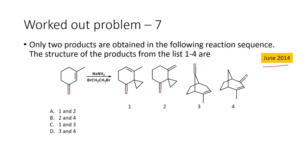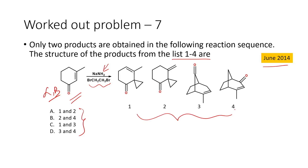Let us move on to the next problem, which appeared in June 2014. Only two products are obtained in the following reaction sequence — an alpha-beta unsaturated carbonyl compound is treated with sodamide and 1,2-dibromoethane. We are supposed to get four different products shown as options: the first and second are cyclopropyl derivatives with the carbonyl unit, and the third and fourth are alkenic compounds with the carbonyl unit.